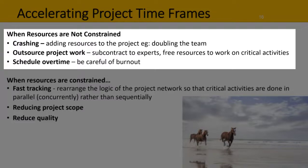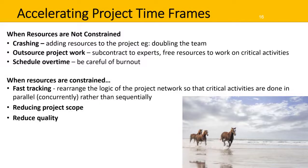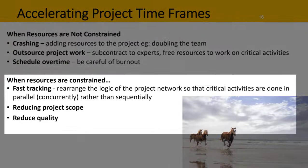You might also schedule some overtime, but be careful of burnout in the project team. When resources are constrained, you could try fast tracking — rearranging the logic of the project network so that critical activities are done in parallel or concurrently rather than sequentially. You might also try reducing the project scope, so doing less, or reducing the project's quality — for example, perhaps doing one less round of testing.